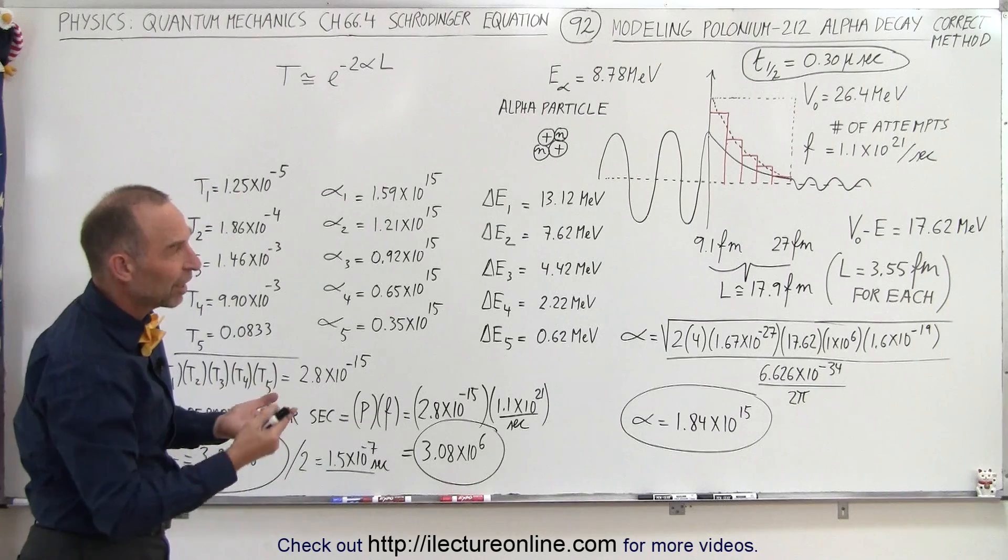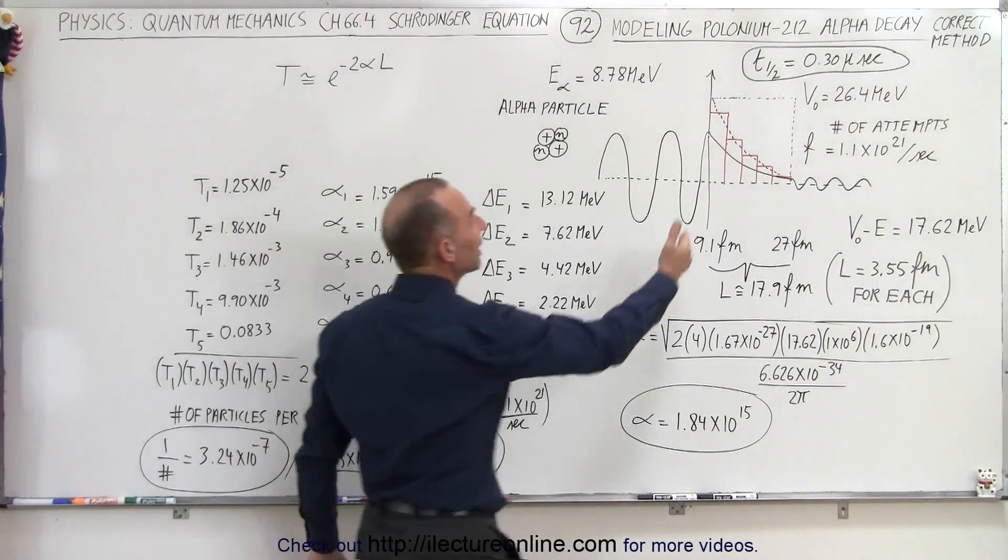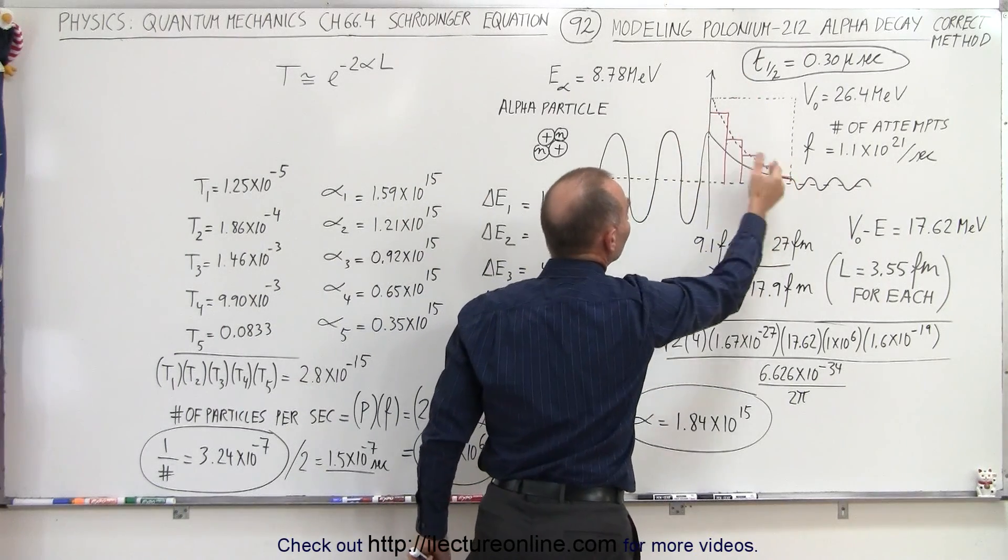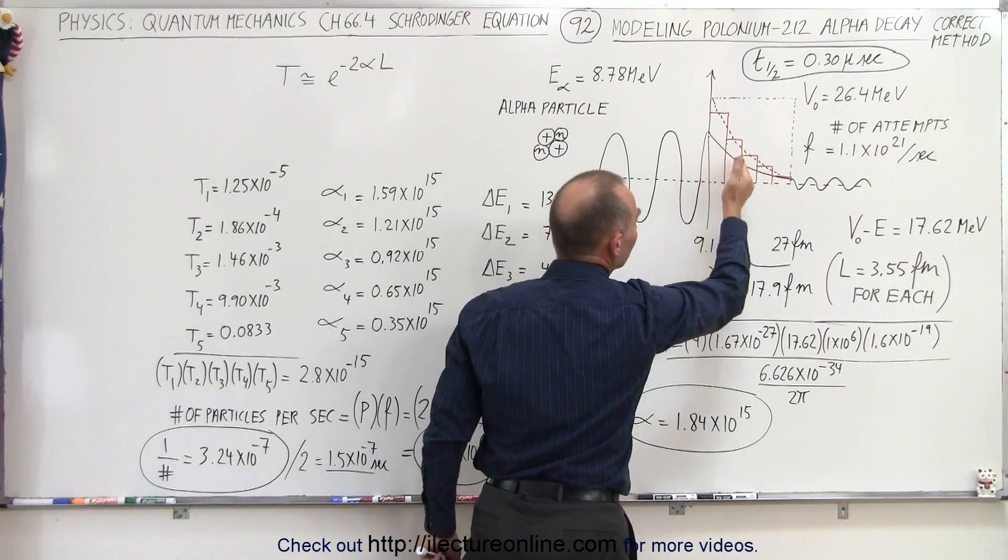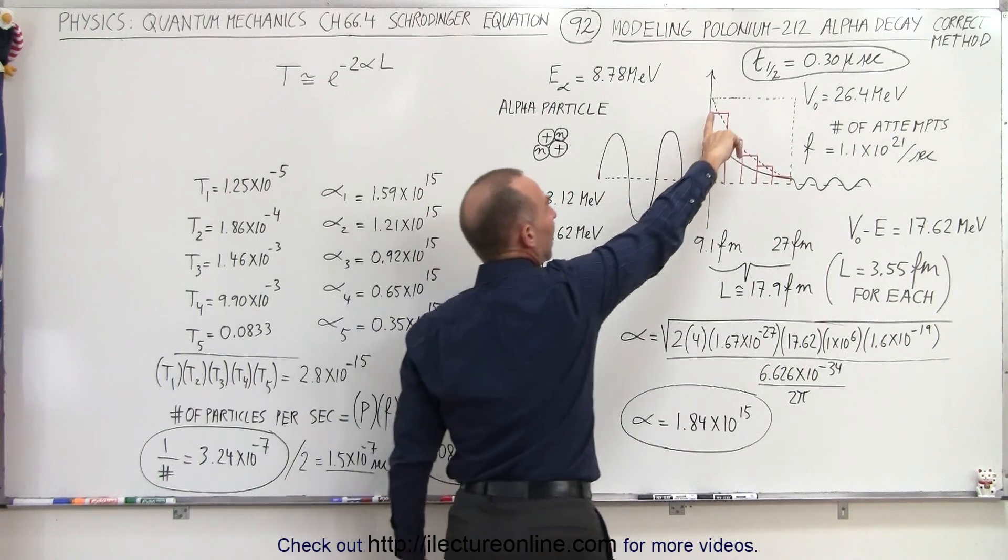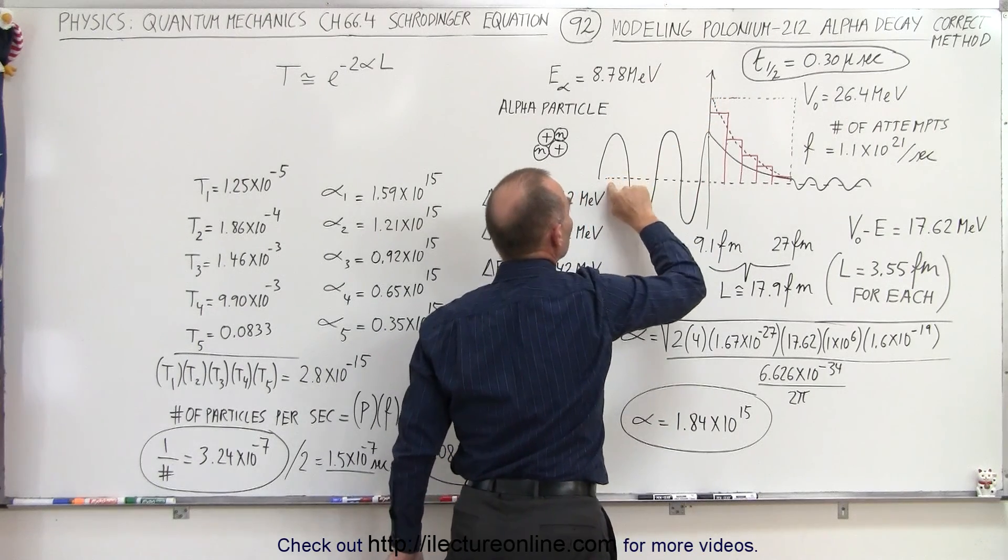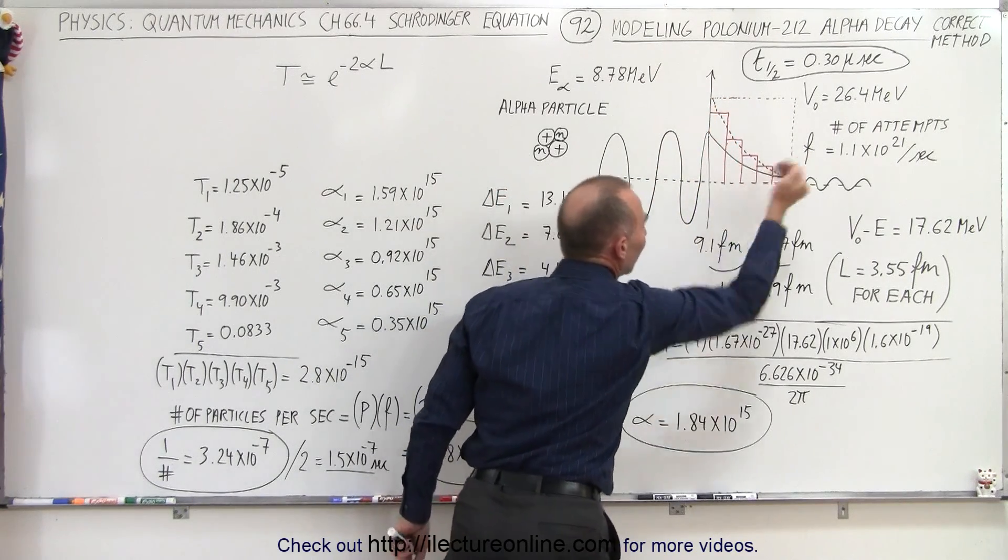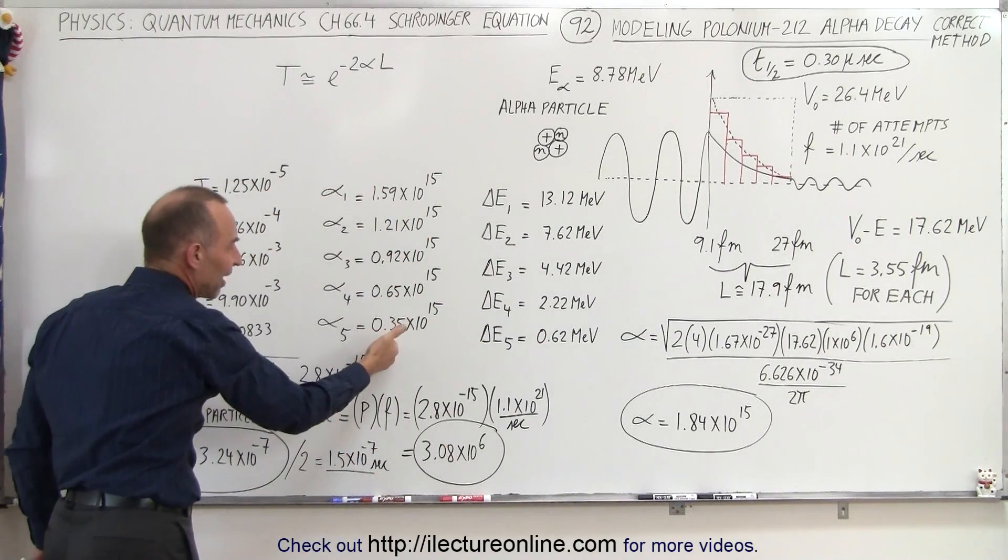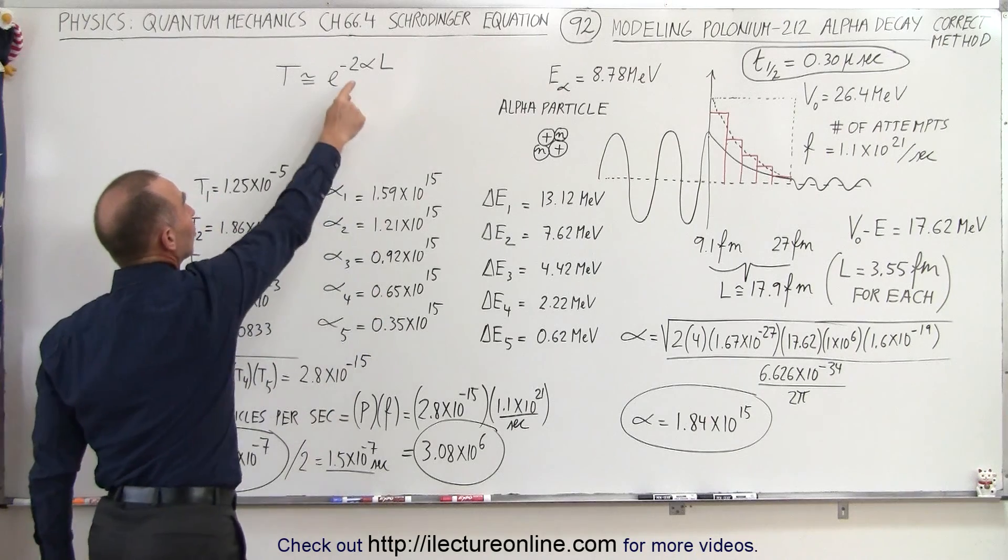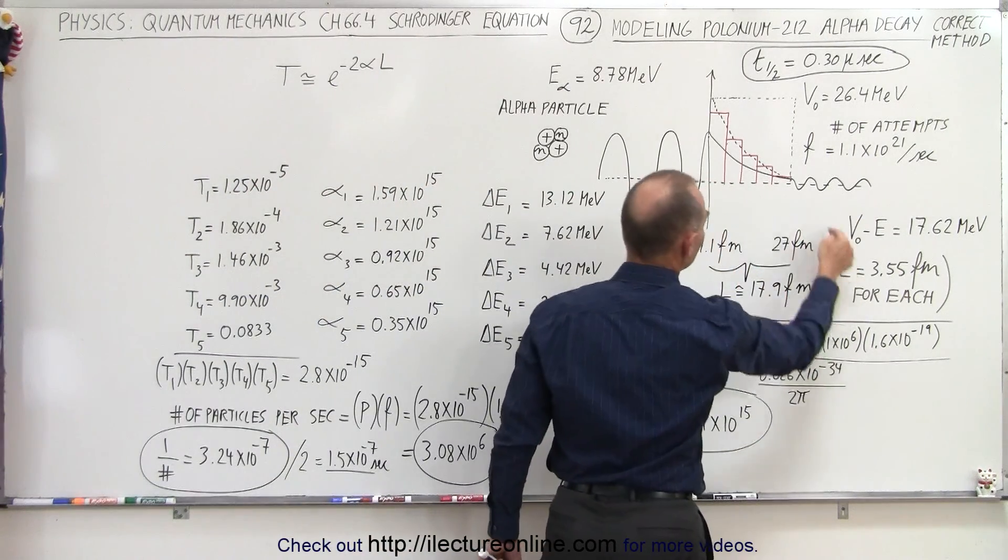So we can see that we can very accurately, well reasonably accurately, model the decay of polonium-212 by assuming that the barrier the alpha particle has to break through can be divided up into small sections. Each section will have a potential, we take the difference between the energy of the particle and the potential, we do that five times. We get five differences in the energy, we get five different values for the alpha. We plug that into our equation, the length of each portion of the barrier simply take the total divided by five.